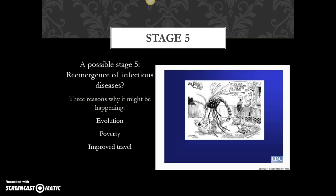Stage five — and again, just like with the demographic transition model, it's a proposed possible stage five. What's really interesting is that what we're seeing in some areas is a reemergence of infectious diseases. There are a lot of reasons for this: diseases may have evolved so they no longer respond to antibiotics, and there are areas where increasing or sudden poverty plays a role in infectious disease spread.